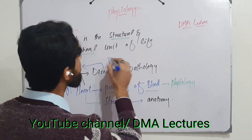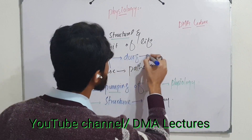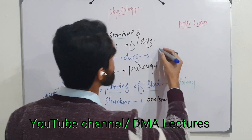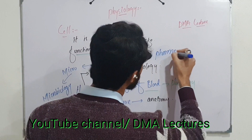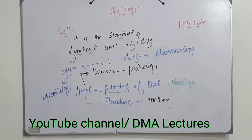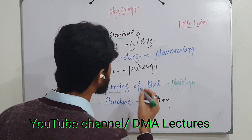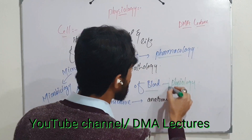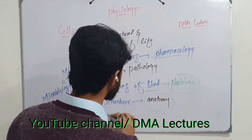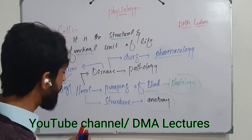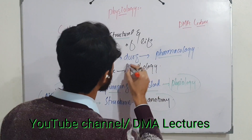If you are studying drugs, you will use pharmacology. The medical branches include pharmacology, physiology, anatomy, and microbiology. If you are studying disease processes, you will use pathology.